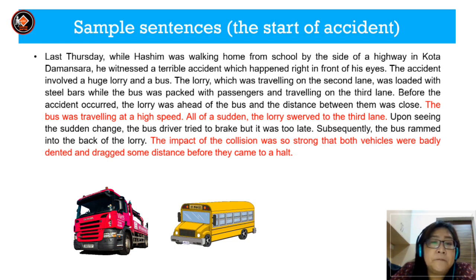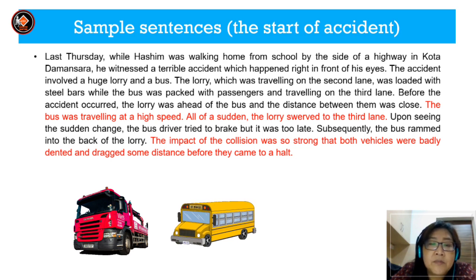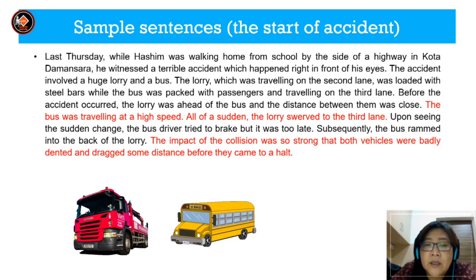Here is another example — remember, this is the starting of the accident. Last Thursday, while Hashim was walking home from school by the side of a highway in Kuala Damansara, he witnessed a terrible accident which happened right in front of his eyes. The accident involved a huge lorry and a bus. The lorry travelling on the second lane was loaded with steel, while the bus was packed with passengers and travelling on the third lane. Before the accident occurred, the lorry was ahead of the bus and the distance between them was close. The bus was travelling at high speed. All of a sudden, the lorry swerved to the right lane. Upon seeing the sudden change, the bus driver tried to brake but it was too late. Subsequently, the bus rammed into the back of the lorry. The impact of the collision was so strong that both vehicles were badly dented and dragged some distance before they came to a halt.